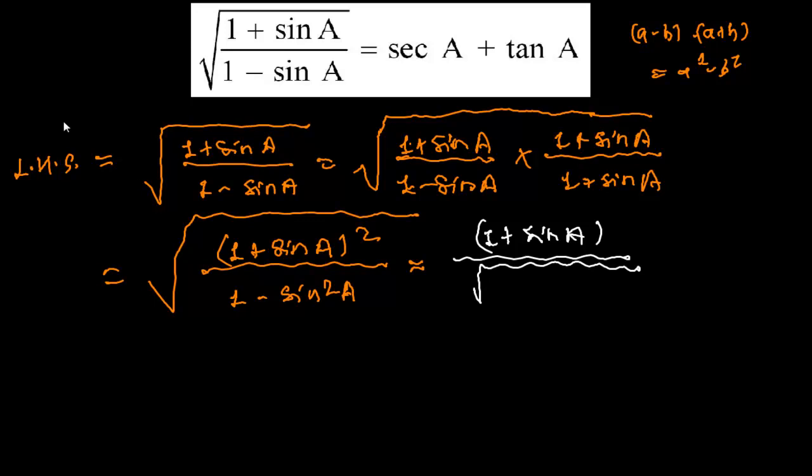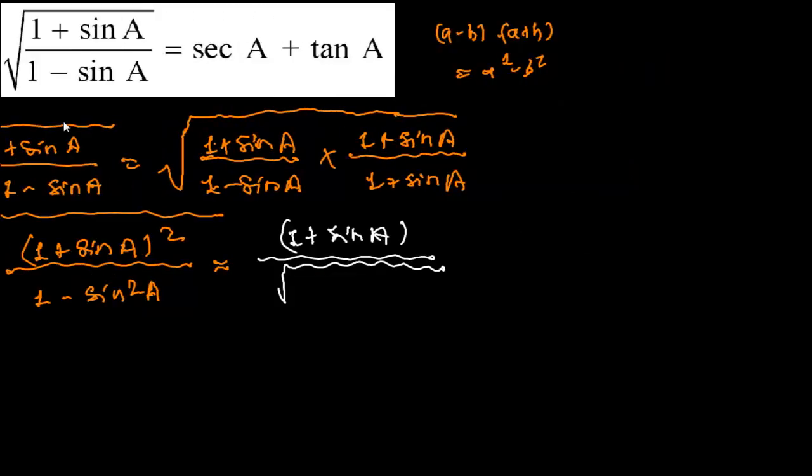Identity that we had learned, that is sin squared theta plus cos squared theta equals 1. And from here if I will take this sin squared to this side then this will give me cos squared theta equals to 1 minus sine squared theta.